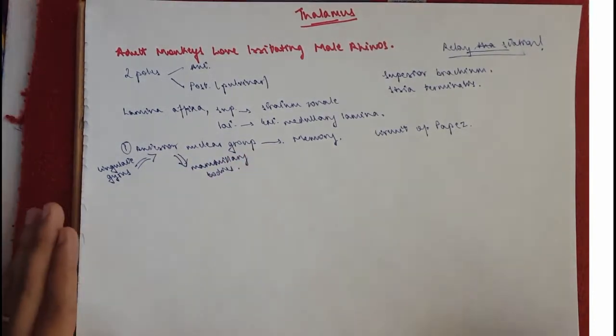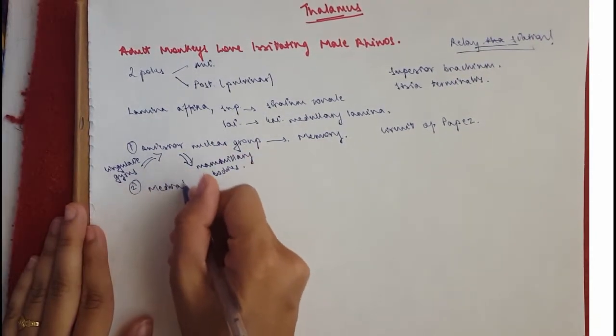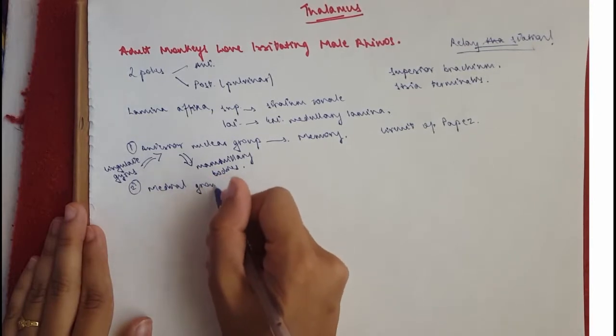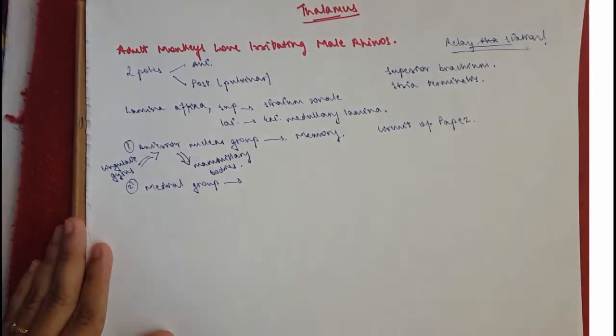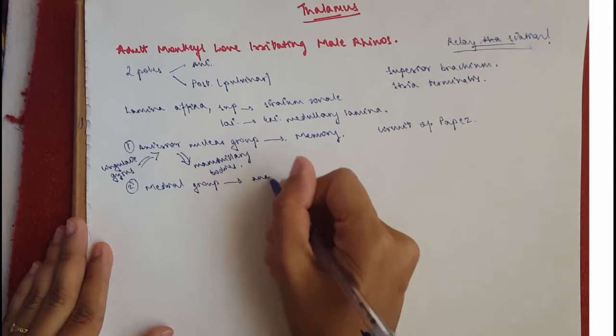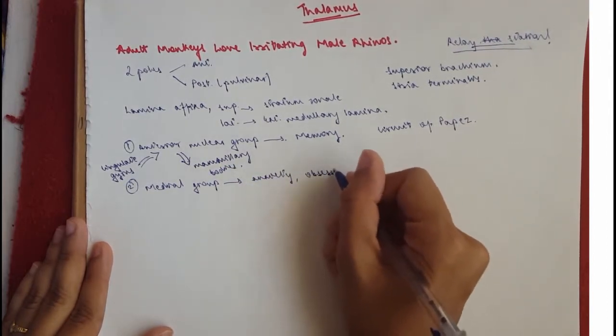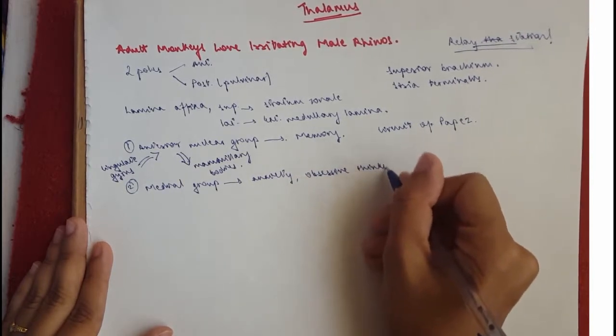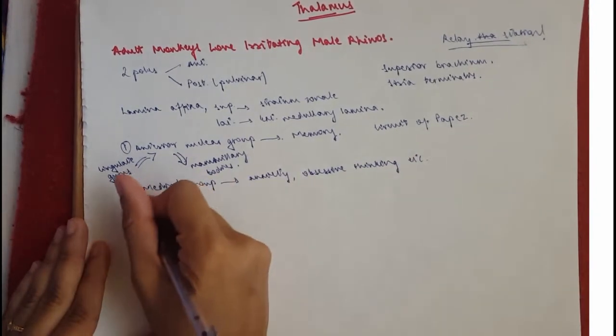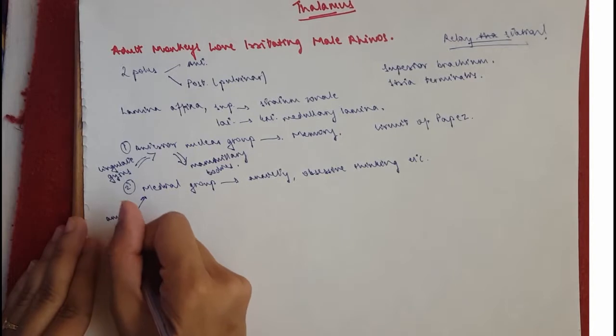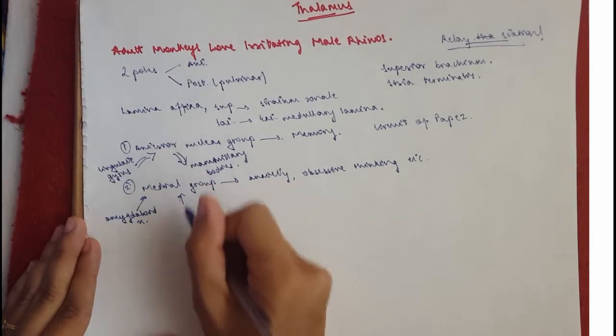And then we move on to the second one which would be monkeys and that would be the medial nuclear group. Medial group and this is for obsessive thinking, anxiety etc. and damage of this section leads to transient amnesia, obsessive thinking, tension etc. So the medial group receives from the amygdaloid nucleus, it receives from the olfactory cortex and the globus pallidus.